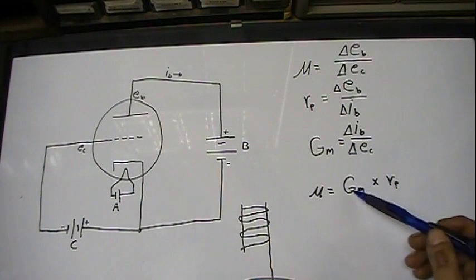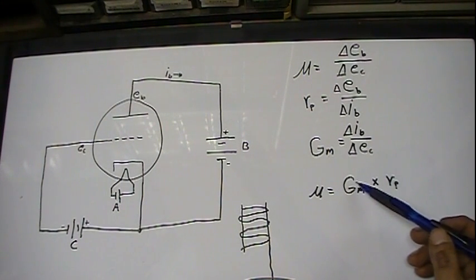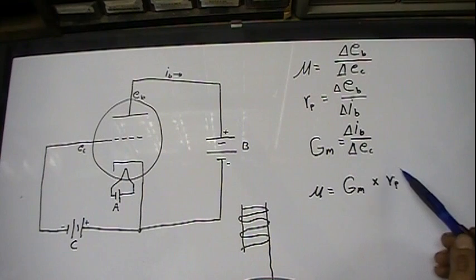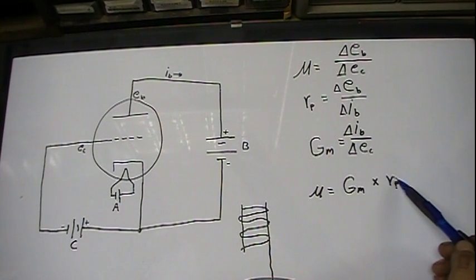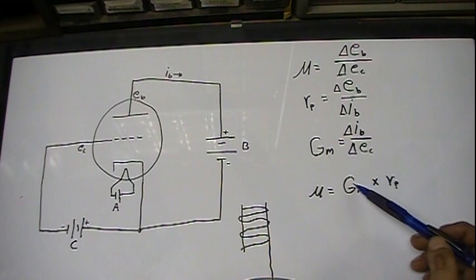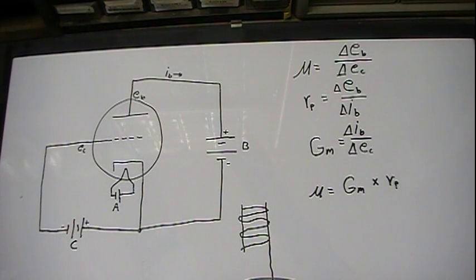How these all relate is mu equals your transconductance multiplied by your plate resistance. Now, this changes also when the tube is in operation. It doesn't stay stable and it exists. But as this goes down, this will go up. If this goes down, this will go up to keep mu fairly constant.